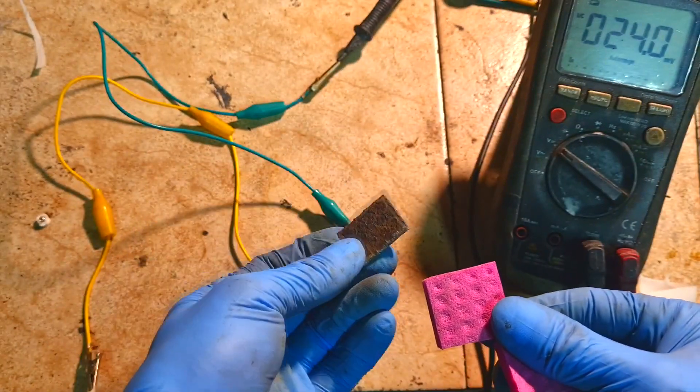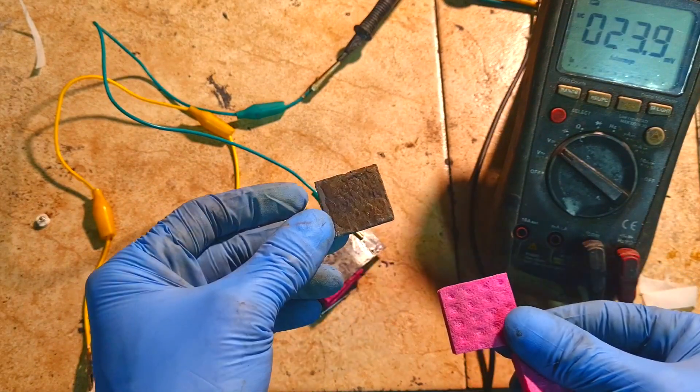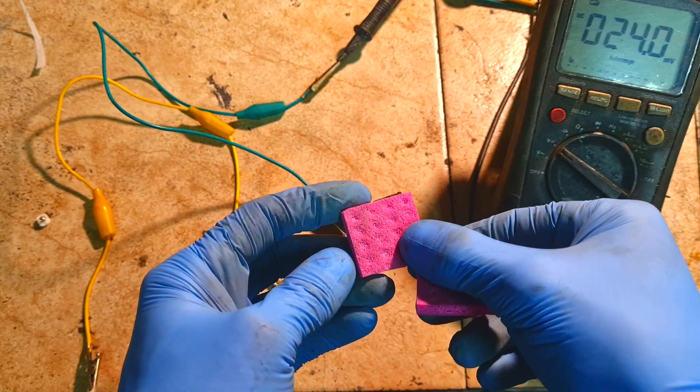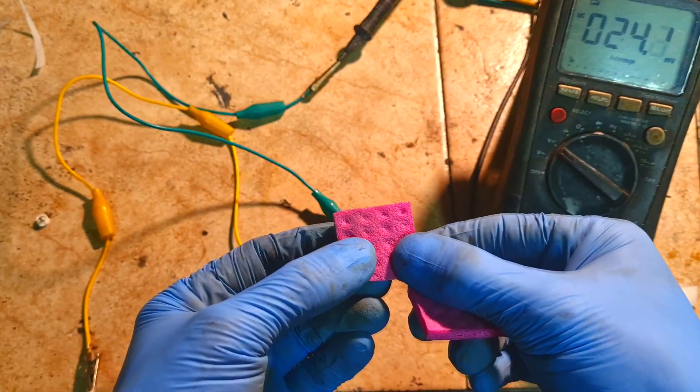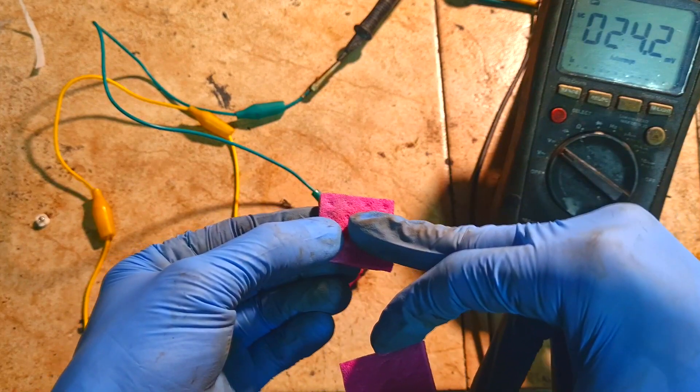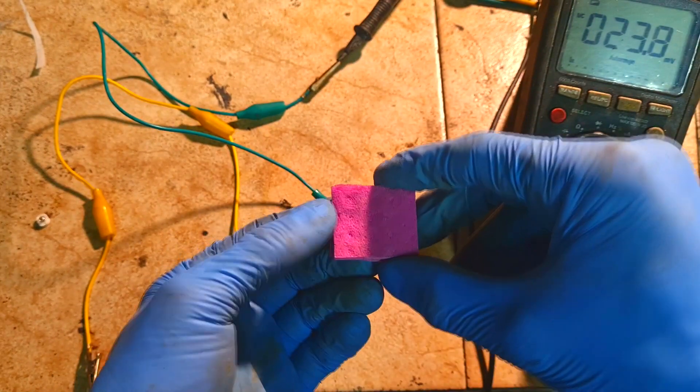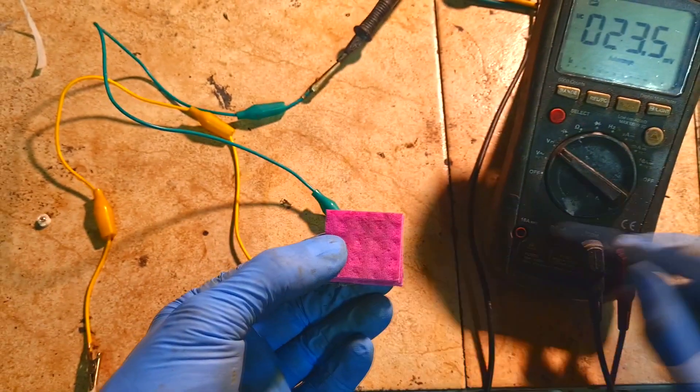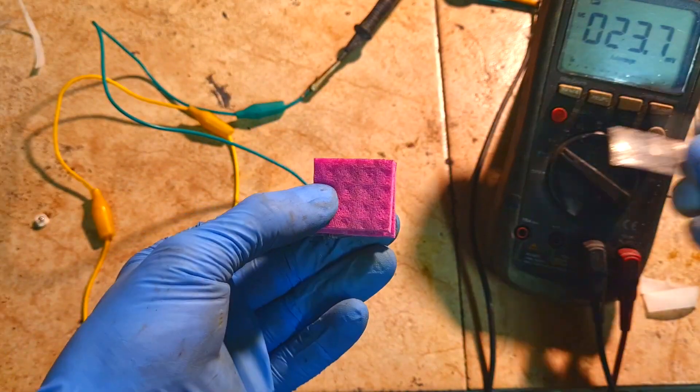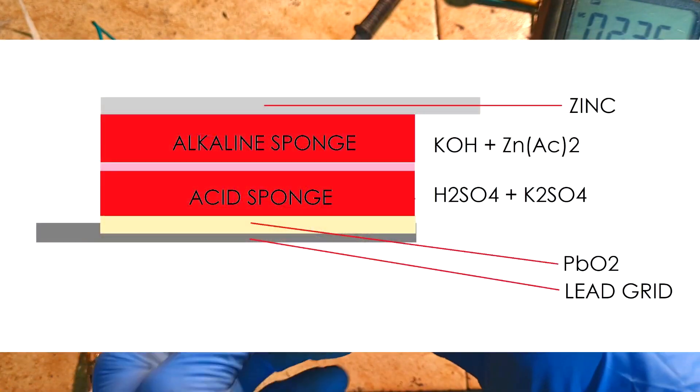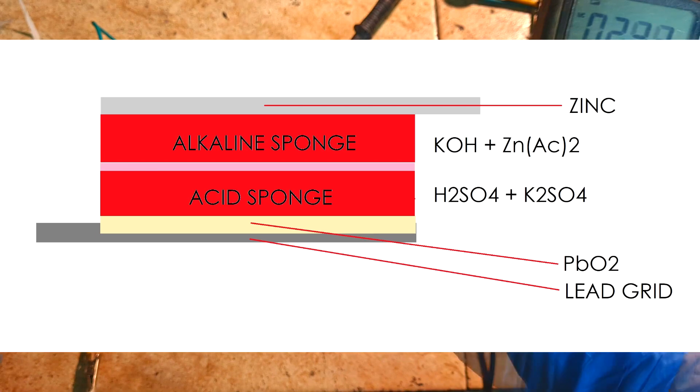I use a lead dioxide electrode. On this lead dioxide electrode I put the sponge with the sulfuric acid, and then on top of this sulfuric acid sponge I put very gently the sponge with potassium hydroxide. On the top I put zinc for the negative electrode.